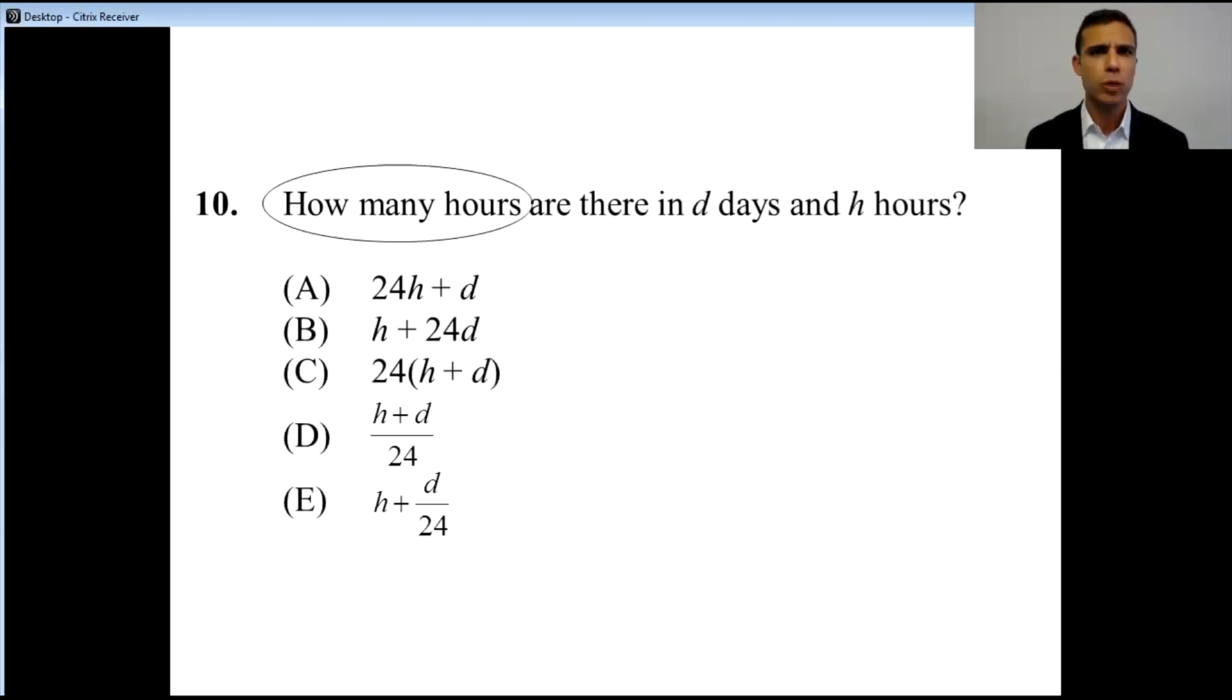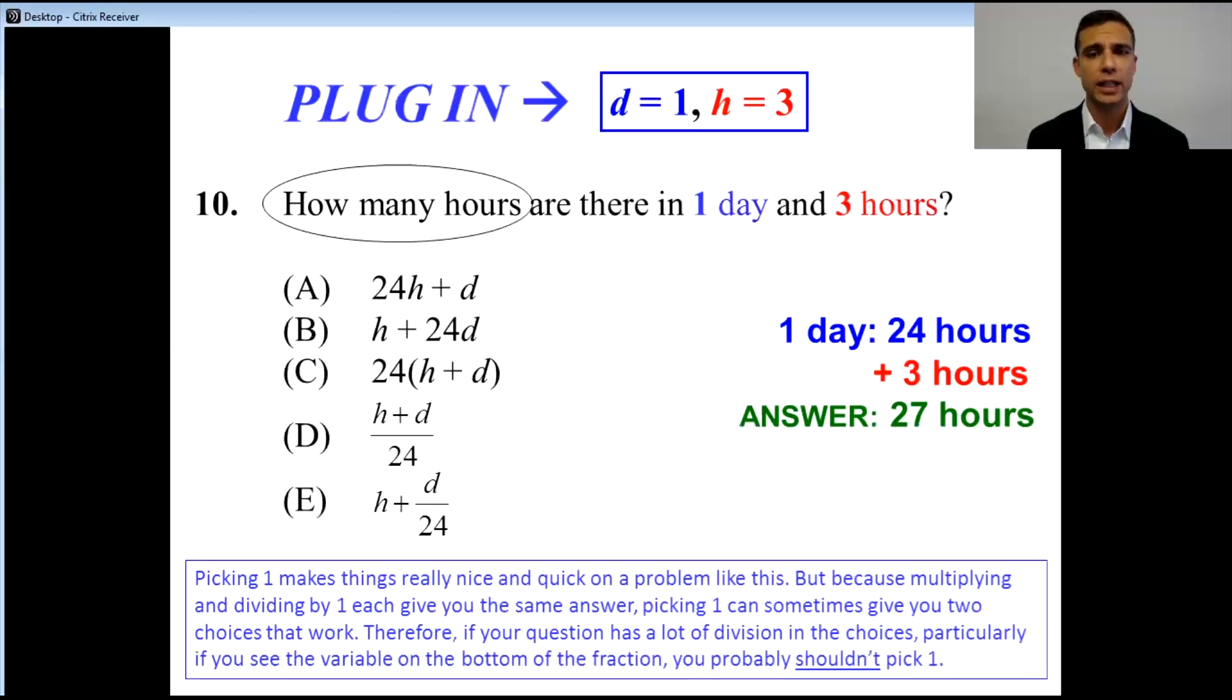Let's take a look at how we might solve this. First, what do we want to know? How many hours? We want to know how many hours there are in some unknown value of days and some unknown value of hours. If you see variables in the question and variables in the answer choices explicitly here as d and h, we can make up whatever we like.